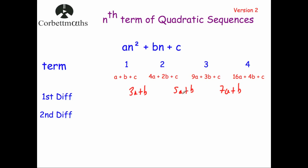The first differences are what you get whenever you take away the terms in the sequence. The second difference is what we get whenever we take away the differences of the terms. So if we see what the difference is between the first two first differences, as you can see it goes up by 2a. So the second difference would be 2a. If you take the second first difference from the third first difference, again you would get 2a. So no matter which ones you take away, you would always get 2a for the second differences.